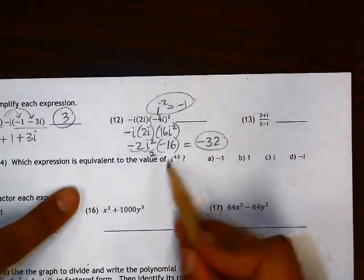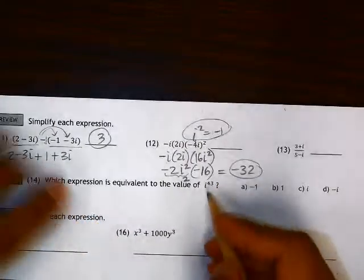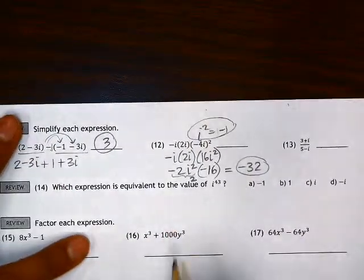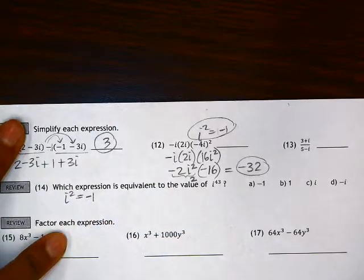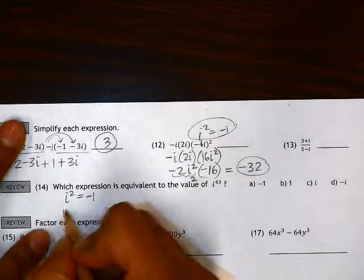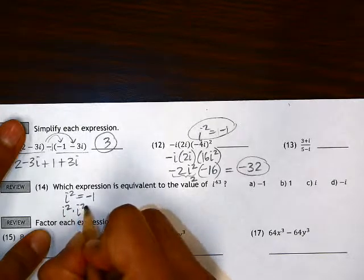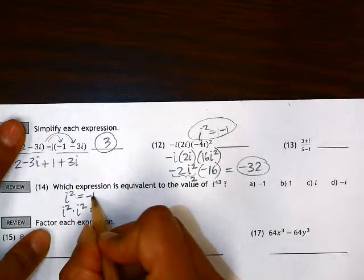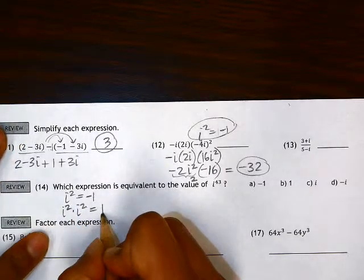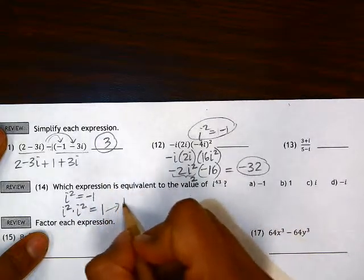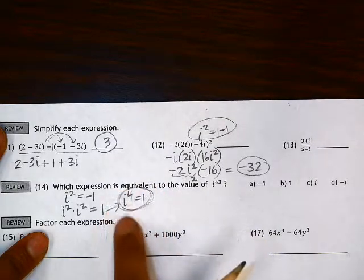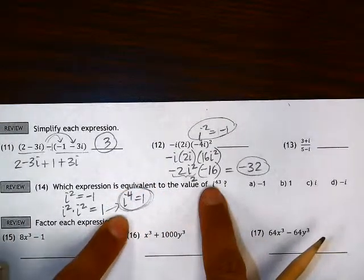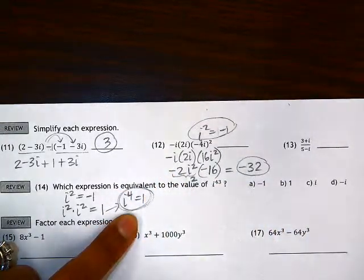Alright, lastly, number 14, the value of i to the 43rd. So the way I prefer to do this is to start with the fact that we know i squared equals negative 1. If i squared equals negative 1, that means if we multiply i squared times i squared, negative 1 times negative 1, we get positive 1. So we've just shown that i to the 4th equals positive 1. If you start with this, it makes the problem very easy to do because 1 is a very nice number to work with.